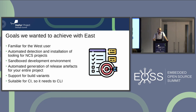We detected there were some problems we could solve with tooling, so we set out to create an internal tool — that became EAST. The goals we wanted to achieve: first, it had to be familiar to the West user — we didn't want to create yet another tool the developer would have to learn. We wanted it to automatically detect and install toolchains for NCS projects. We needed a sandbox development environment — we didn't want access to system binaries causing version clashes. It should support automated generation of release artifacts for the entire project, support for build variants, and be suitable for CI. Ideally, we wanted a tool we could later reuse in GitHub Actions to directly call and be done with it.